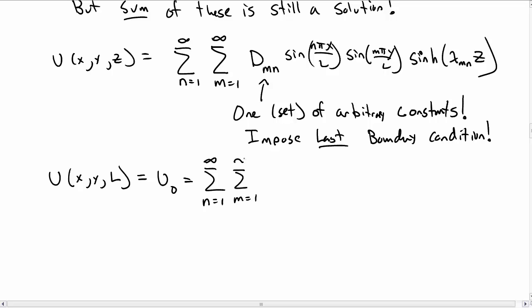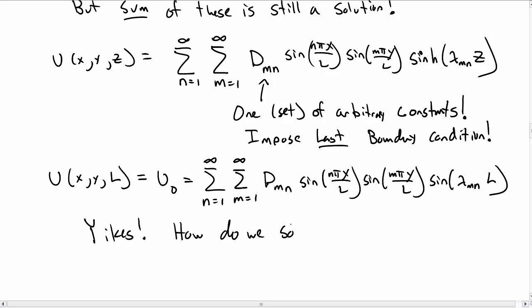and z equal to L at the top of the cube is equal to some constant u_0. That's equal to the double sum over m and n of the expression we just had above with the sines in the x and y direction, but with z equal to L. So we have a sinh of λ_mn times L. This looks pretty ugly, so how do we actually end up solving this?